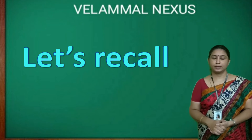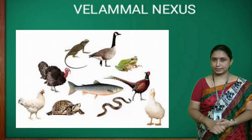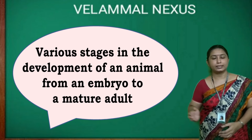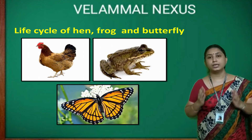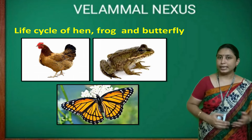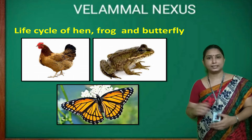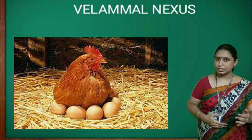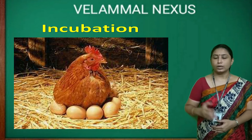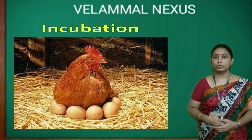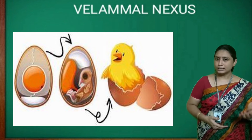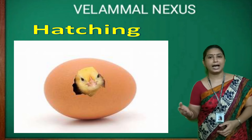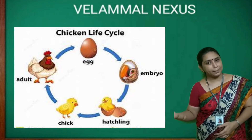Let's recall the key points. Many animals reproduce by laying eggs. Various stages in the development of an animal from an embryo to a mature adult is called its life cycle. In the life cycle of hen, the mother hen lays eggs in her nest and sits on them — this is called incubation — which helps the embryo develop. Once the embryo develops into a chick, it breaks the shell — this is called hatching. Then the young chick grows up to become an adult hen.